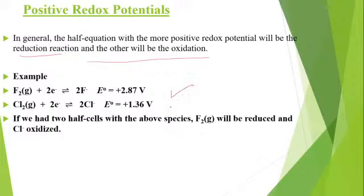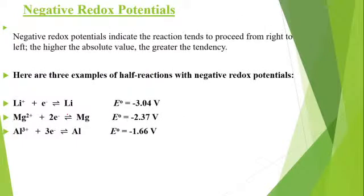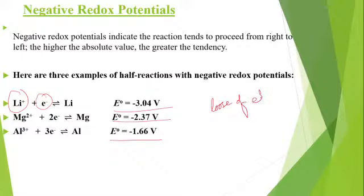Fluorine's value is 2.87 and Chlorine's is 1.37. If we write the other half-cell, it changes form — that is called negative redox potential. In negative redox potential, Lithium ion gaining an electron has a value of minus 3.04. Magnesium's value is minus 2.37, Aluminium's is minus 1.66. These are normal metals — the property of metals is loss of electrons, so metals generally lose electrons and do not gain them. Therefore their redox potential is negative when they are shown gaining electrons.